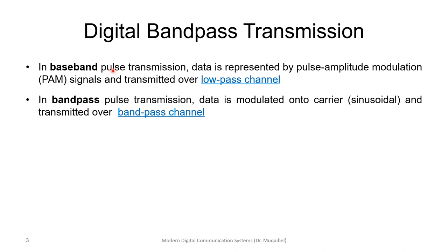In baseband pulse transmission, data is represented by pulse amplitude, or by modifying a pulse and transmitting it over a low-pass channel. So the channel is low-pass, so the communication is baseband. It could be PAM — pulse amplitude, pulse width, pulse duration, or pulse position. However, in band pass pulse transmission, data is modulated onto a carrier.